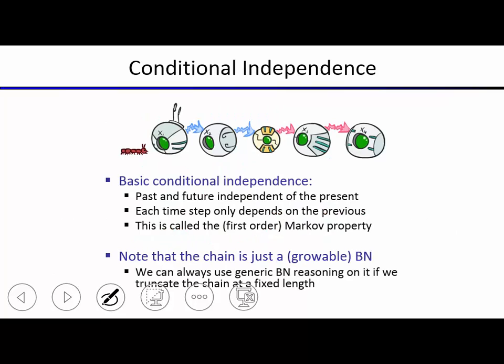The basic conditional independence assumption in this model is that the past is independent of the future given the present. Once you observe the middle variable, observing anything about the past gives no new information about the future. The middle variable d-separates all future variables from all past variables. This is called the Markov property: the distribution for the next time step depends only on the current state; variables further in the past have no influence.